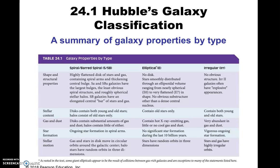You can think of the halos as having just very old stars — nothing new is happening in the halos, not the disc. The gas and stars in the disc move in circular orbits around the center of the galaxy. The halo stars are moving in all sorts of crazy, random three-dimensional directions. That's actually true for our galaxy's central bulge as well — the stars there are moving in all sorts of crazy directions.